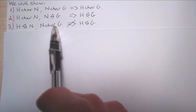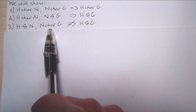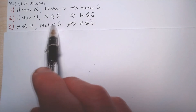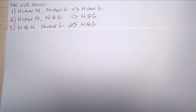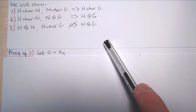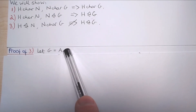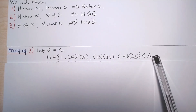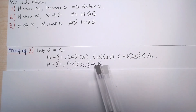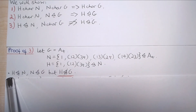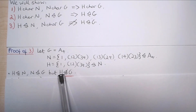For the final part we will construct a counterexample — we will show that there is a group G with subgroups N and H such that H is a normal subgroup of N and N is a characteristic subgroup of G but H is not a normal subgroup of G. It turns out that the counterexample used to show that the normal subgroup property is not transitive works equally well here. In that example we had G equal to the alternating group A4 on four letters, the following normal subgroup N of A4 consisting of all disjoint two-cycles, and then the two-element subgroup H of N which was normal in N. We showed in another video that H was normal in N, N was normal in G, but H was not normal in G.